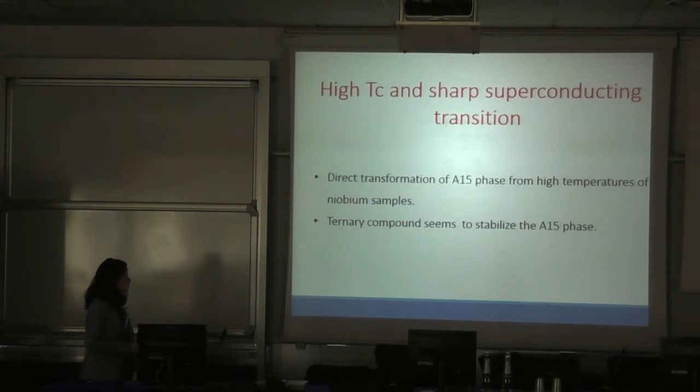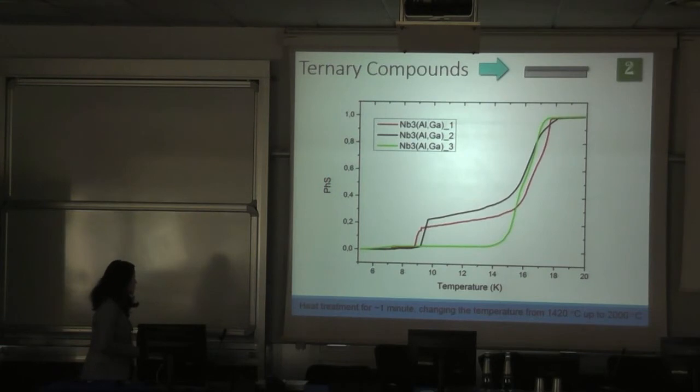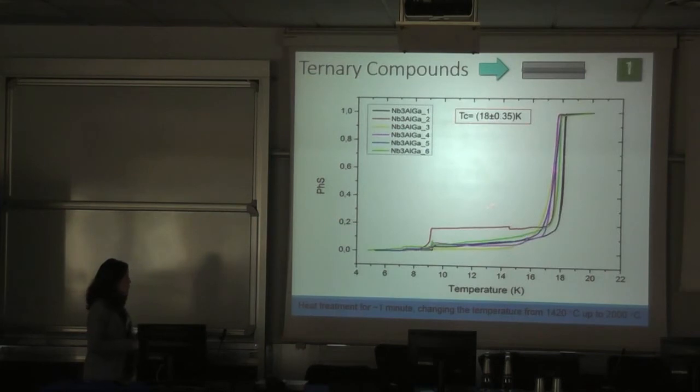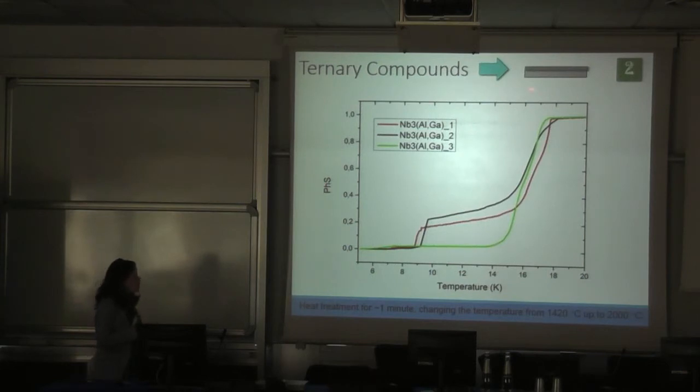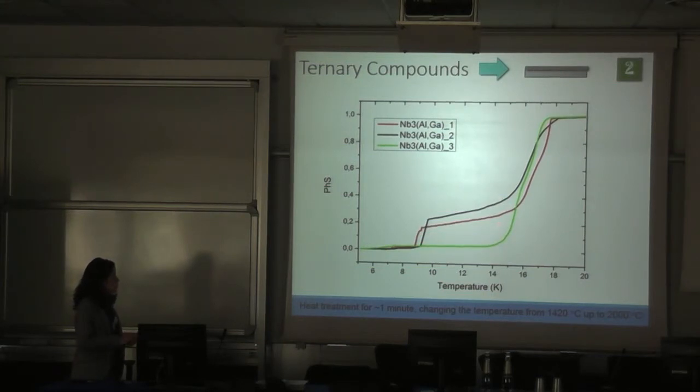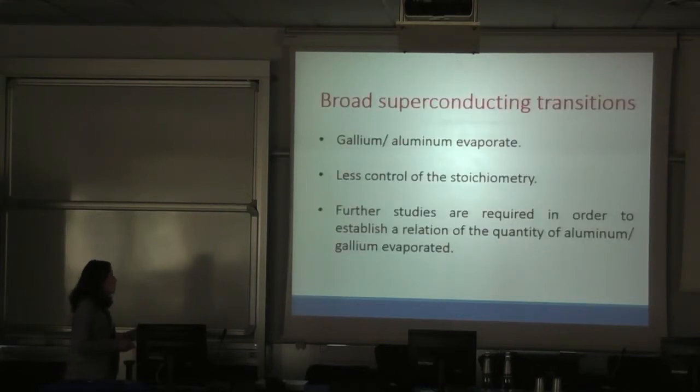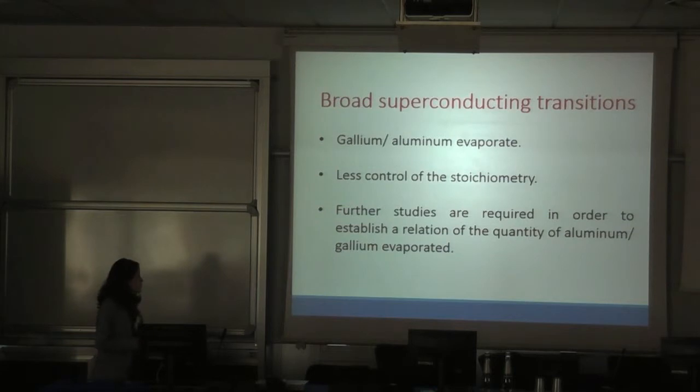It means direct transformation of A15 phase from higher temperature of niobium samples. The ternary compounds seem to stabilize the A15 phase. These graphics are with the closed configuration. Then we tried an open configuration, but it seems like it started with higher transition but then became broad. We can say that some gallium or aluminum evaporate, so we have less control of the stoichiometry. This means further studies are required in order to establish a relation of the quantity of aluminum gallium evaporated.